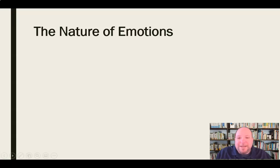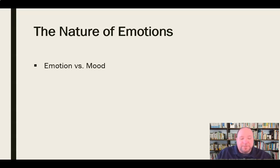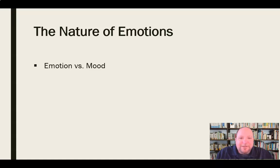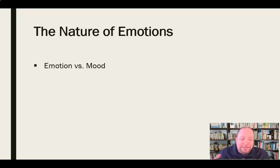A couple of things we also need to understand about the nature of emotions. One question that comes up is: how is emotion different from mood? We use those words interchangeably, but they mean two different things. Emotions are triggered by a specific event — there's a specific triggering event. Whereas mood does not have that triggering event; it just kind of happens upon us, like waking up on the wrong side of the bed. Also, emotion tends not to last as long as a mood does — a mood lingers longer than an emotion.